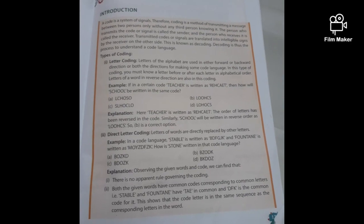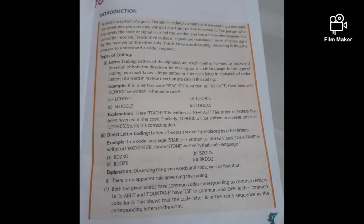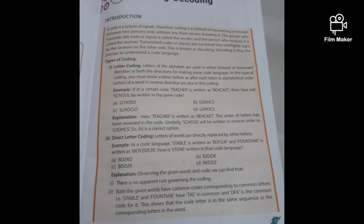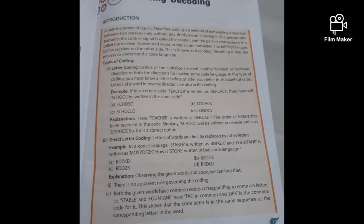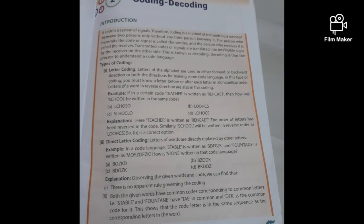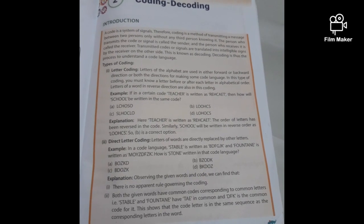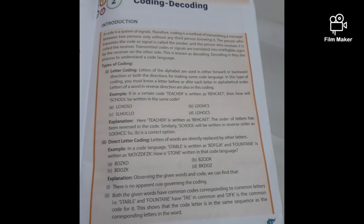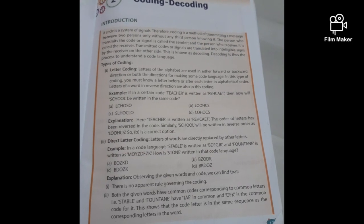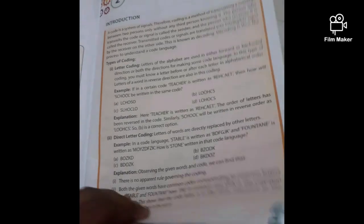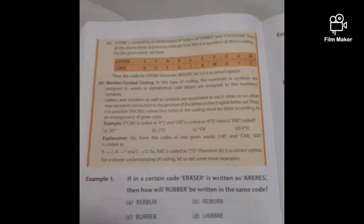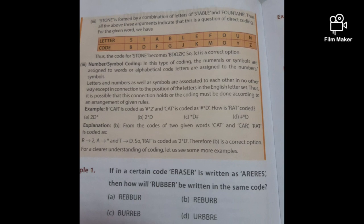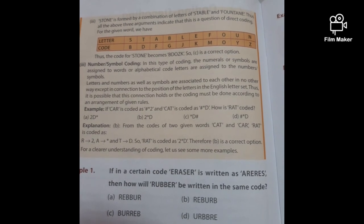So what is decoding? It is a process to understand the code language. We also learned letter coding, direct letter coding, and number coding. When letters of the alphabets are used in either forward or backward direction or both directions for making some code language, it is letter coding. If the letters of words are directly replaced by other letters, it is direct letter coding. In number or symbol coding, numerals or symbols are assigned to words, or alphabetical code letters are assigned to the numbers or symbols.